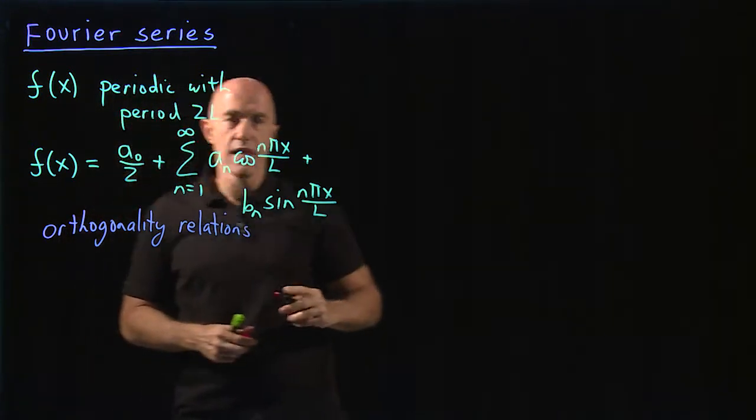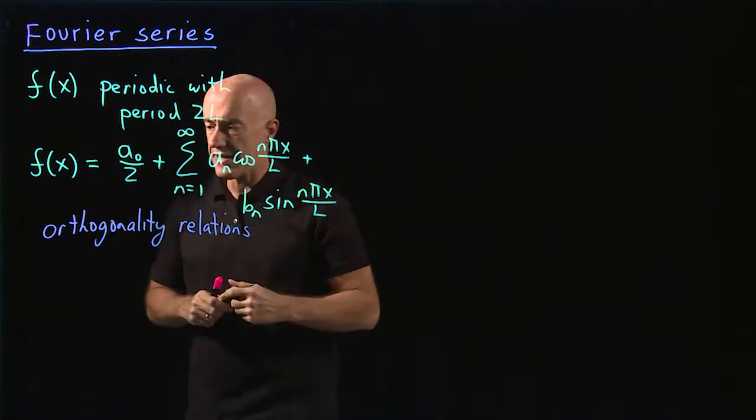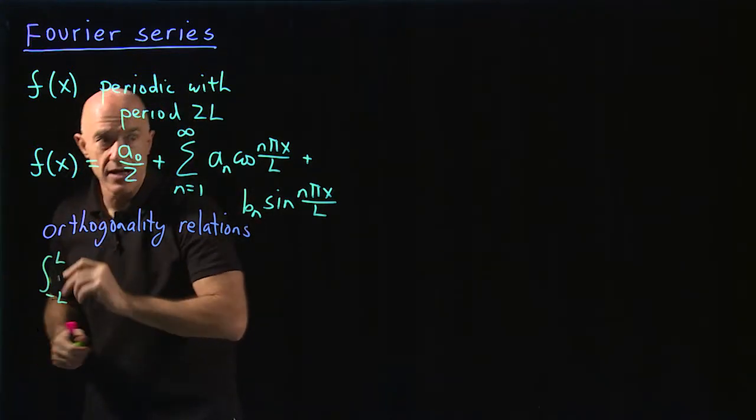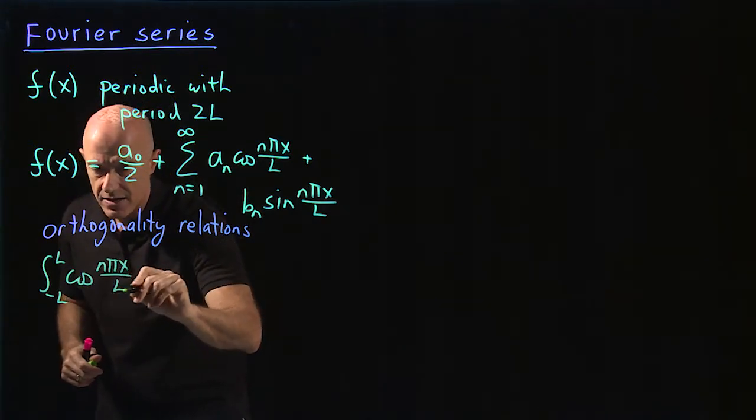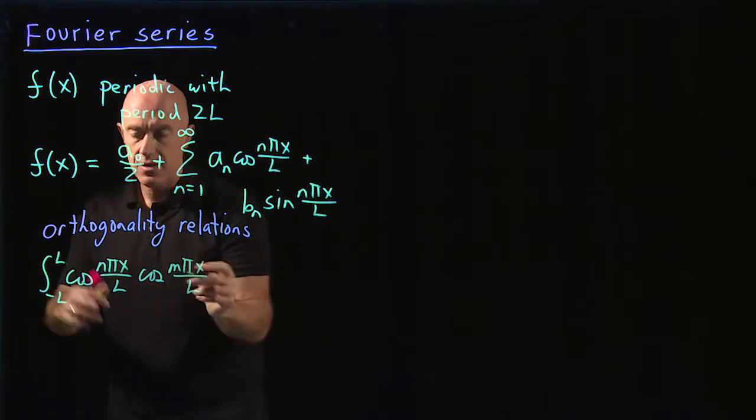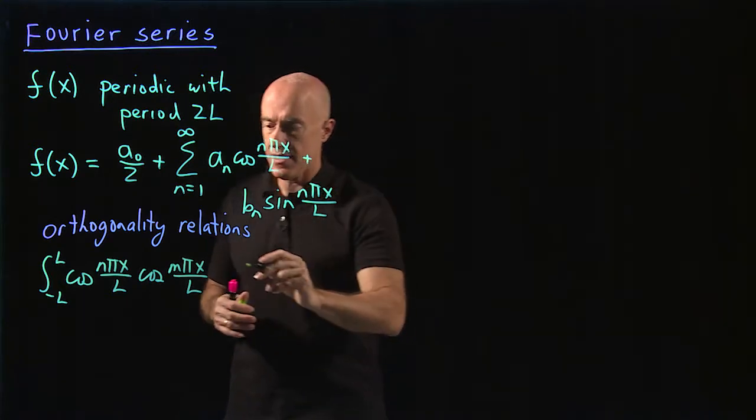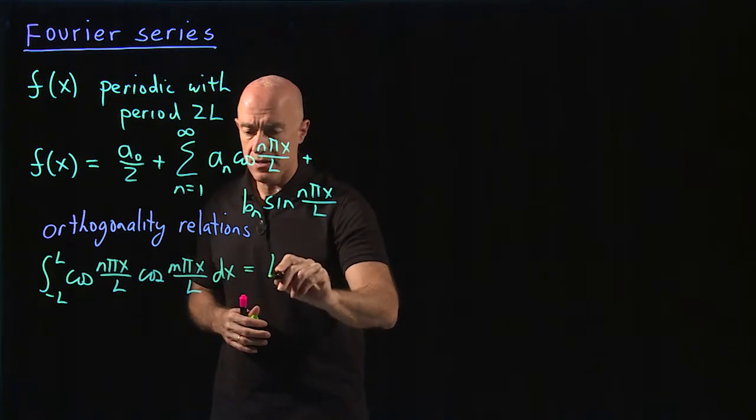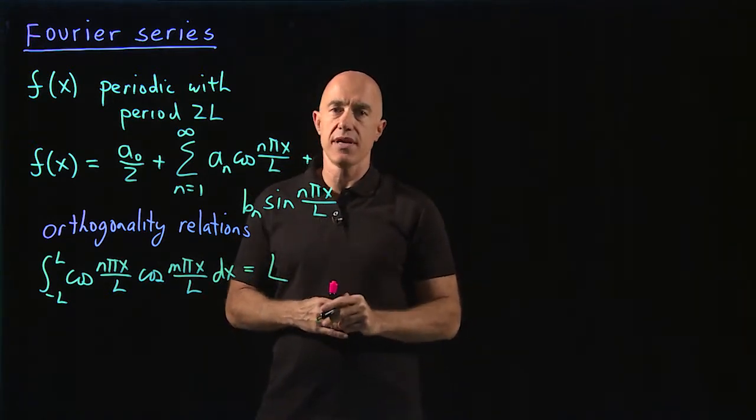Those are relations concerning these cosine and sine functions. If you integrate from minus l to l, a cosine function, cosine n pi x over l, times a cosine m pi x over l, where n and m are two different positive integers, and we integrate this dx, what you get is l, but you only get l when n and m are equal, otherwise you get zero.